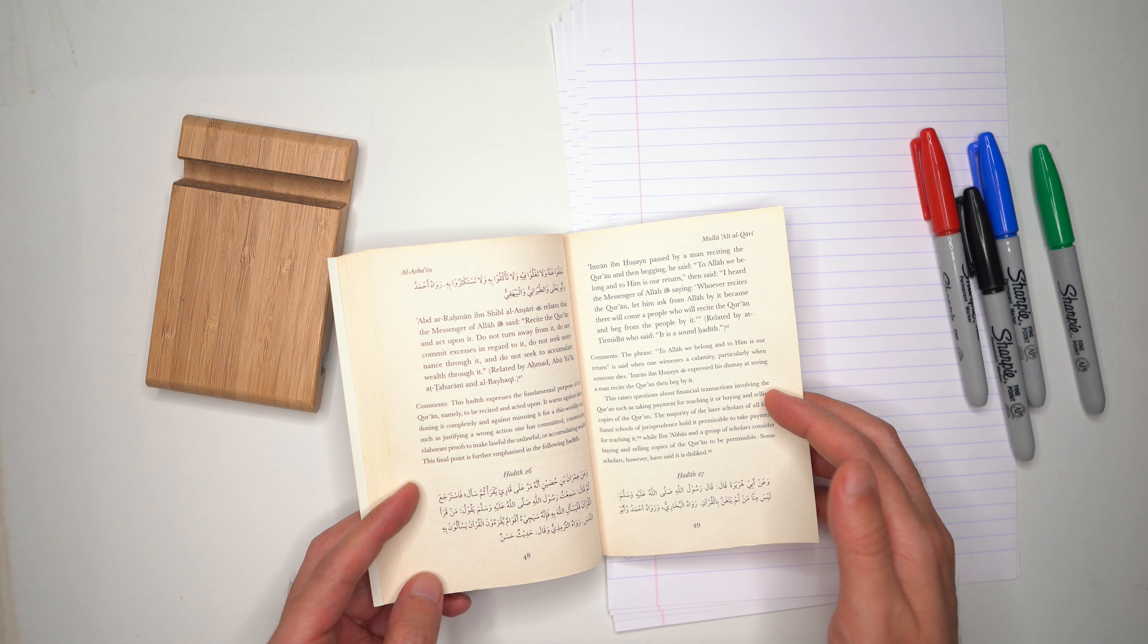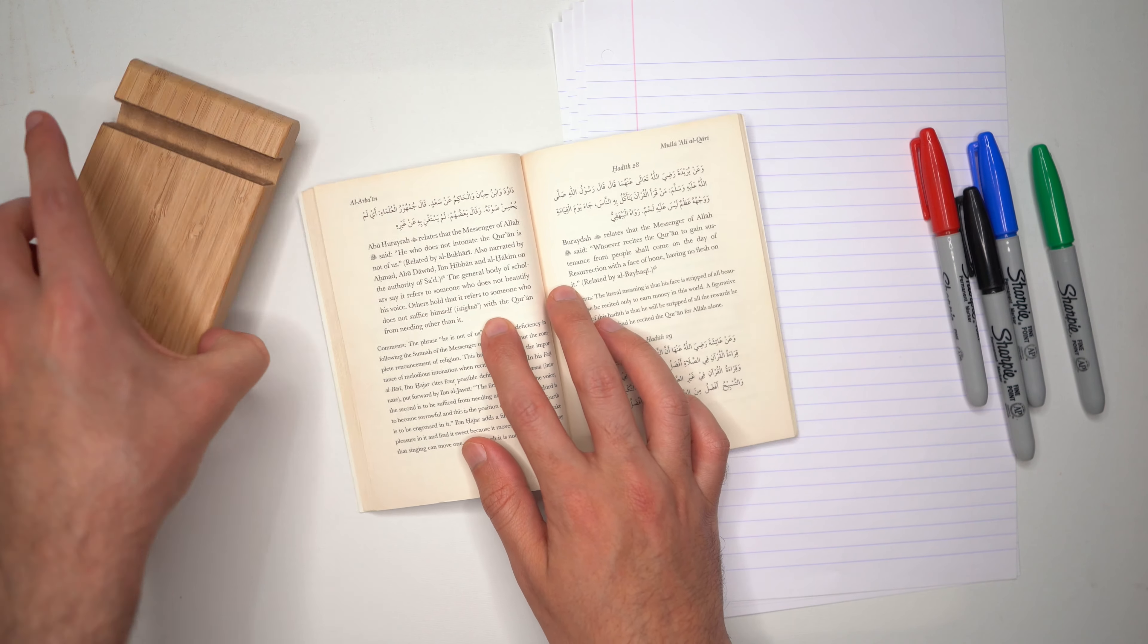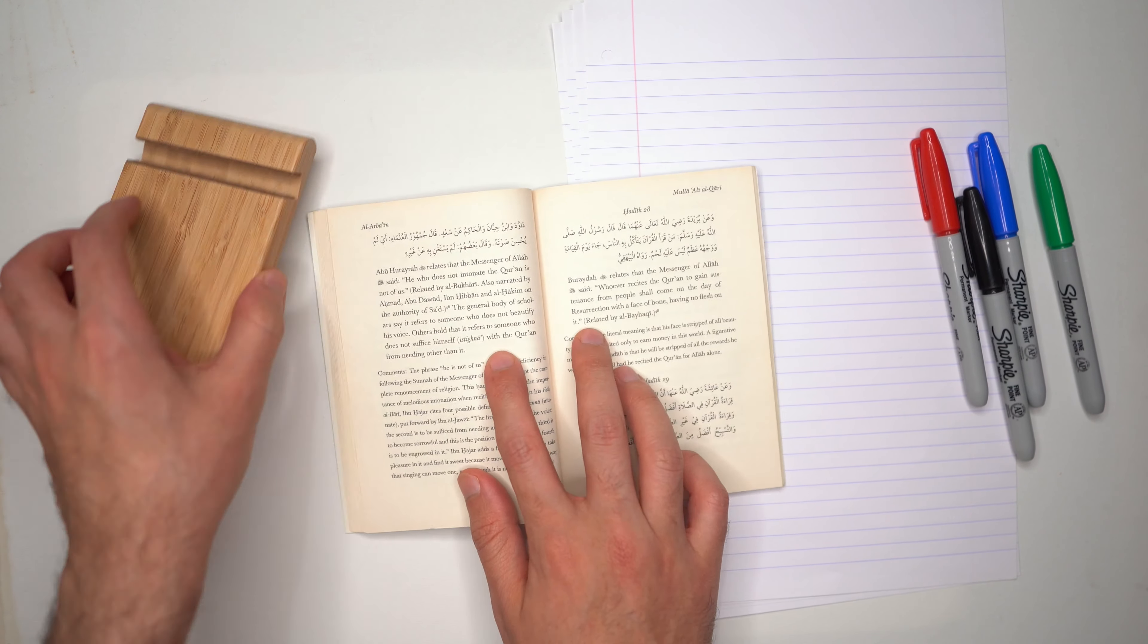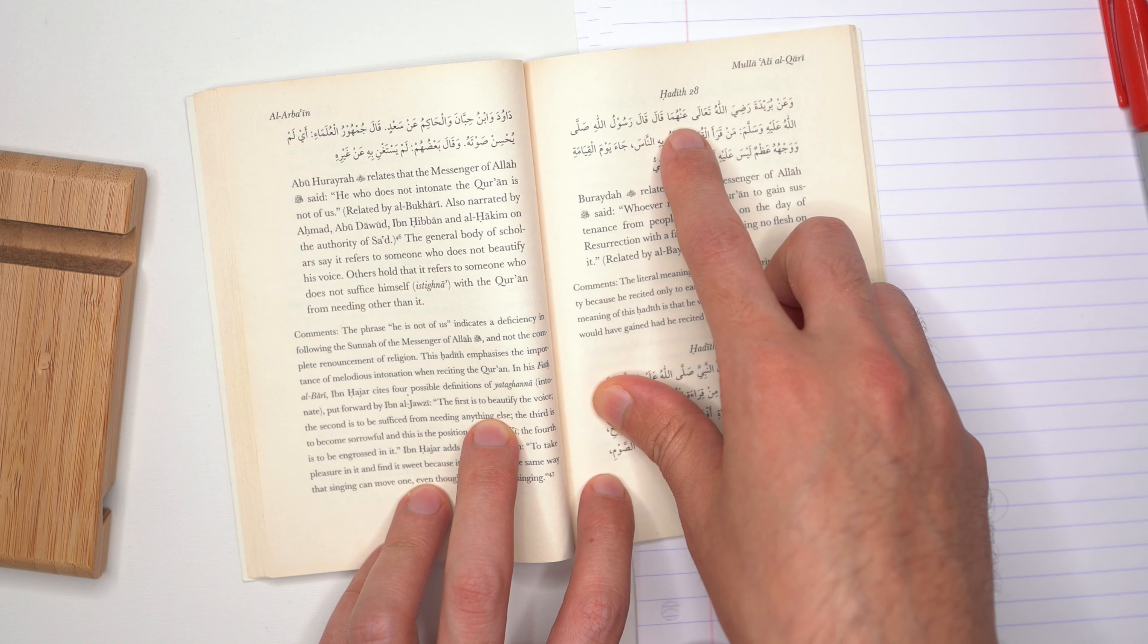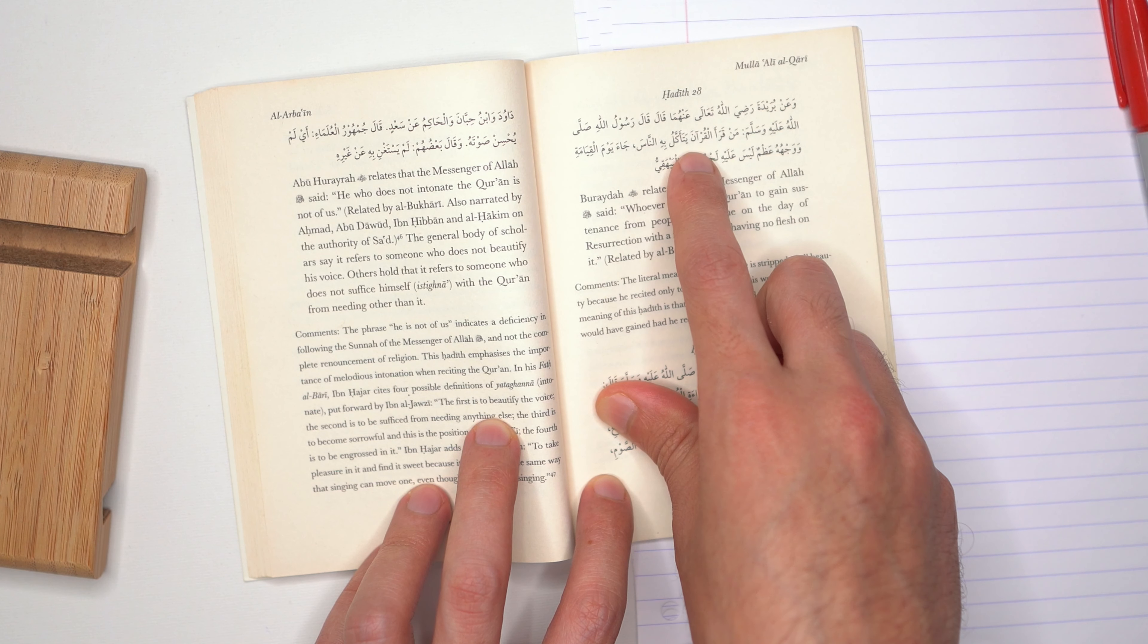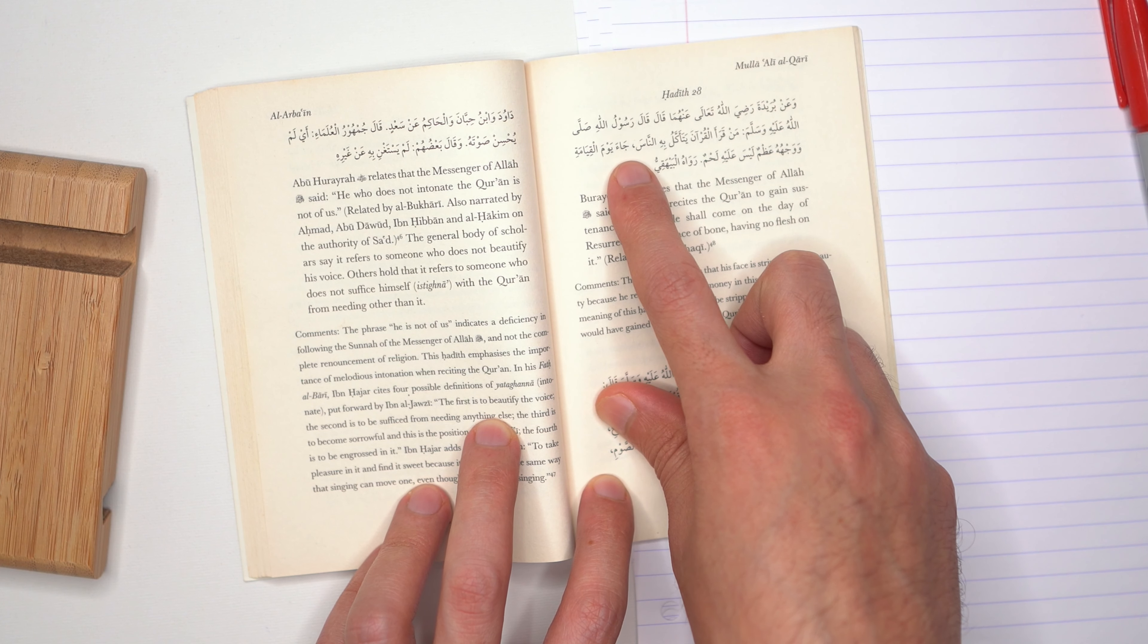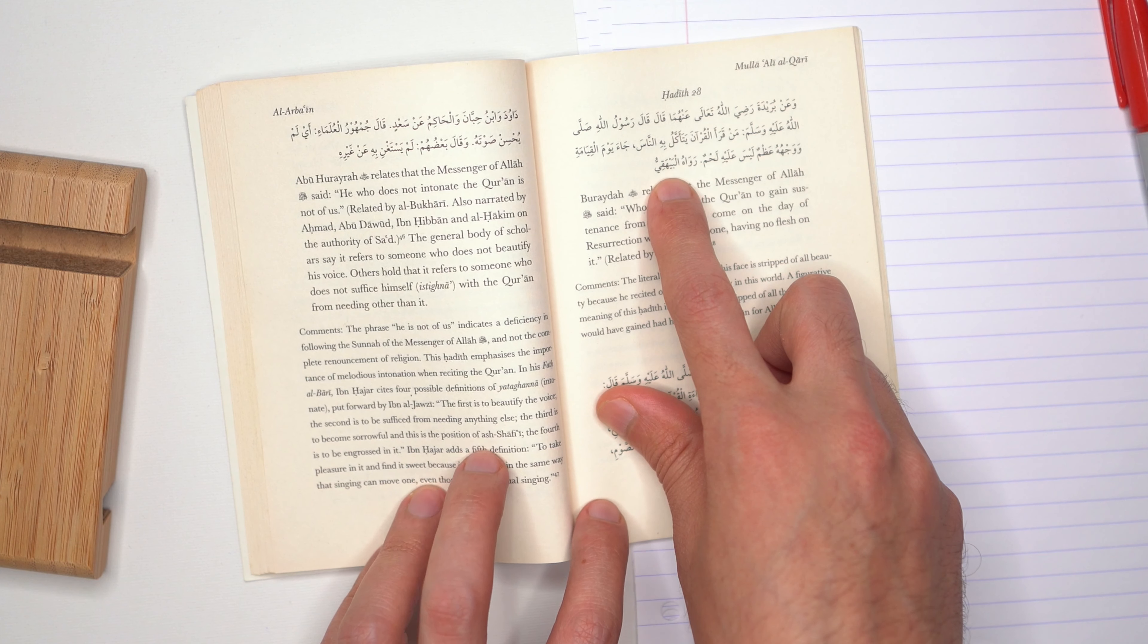The next hadith: Allahumma salli wa salli mubarak ala sayyidina muhammad wa ala alihi wa sahbihi ajma'in. From Bureydata radiyallahu ta'ala anhu, who said the Messenger of Allah sallallahu alayhi wa sallam said: Man qara'a al-qur'ana yataakkal bihin nas jaa yawm al-qiyamati wa wajhuhu azmun leysa alayhi lahmun. Narrated by Al-Bukhari.